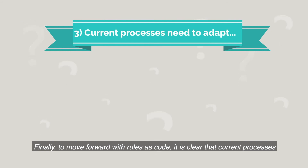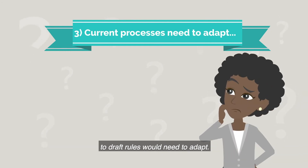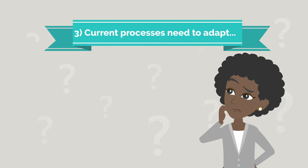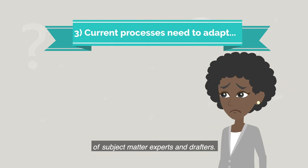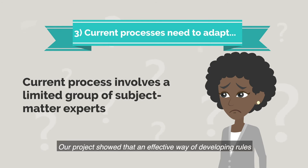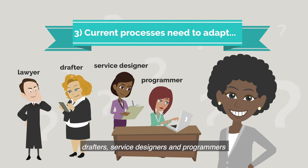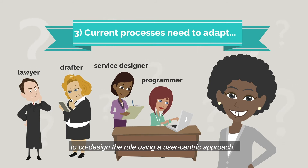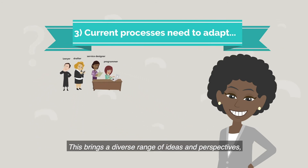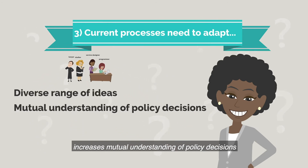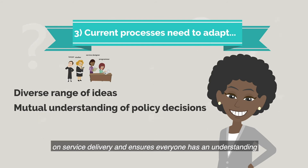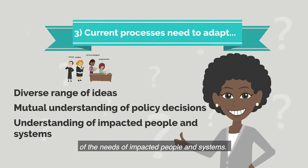Finally, to move forward with rules as code, it is clear that current processes to draft rules would need to adapt. The current drafting process involves a limited group of subject matter experts and drafters. Our project showed that an effective way of developing rules is for multidisciplinary teams of subject matter experts, drafters, service designers, and programmers to co-design the rule using a user-centric approach. This brings a diverse range of ideas and perspectives, increases mutual understanding of policy decisions on service delivery, and ensures everyone has an understanding of the needs of impacted people and systems.